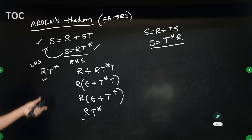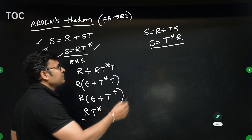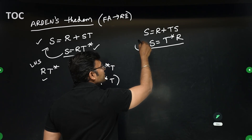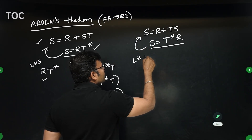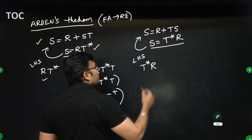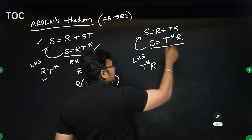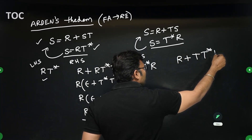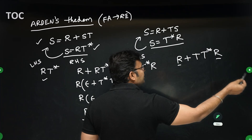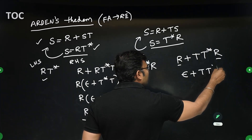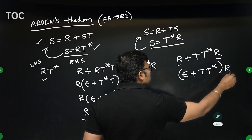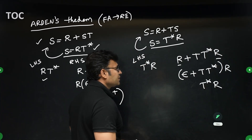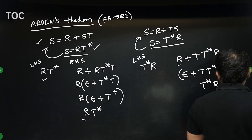If you forget in the exam, you can derive it to check which form is correct. For S = R + TS, the solution is S = T*R. Substituting: LHS is T*R, and RHS is R + T(T*R). Pulling out R as common gives (ε + TT*)R, which equals T*R. So LHS equals RHS, confirming S = T*R is the correct solution.